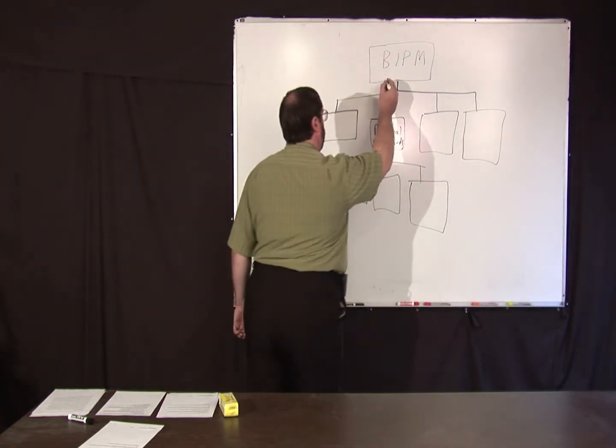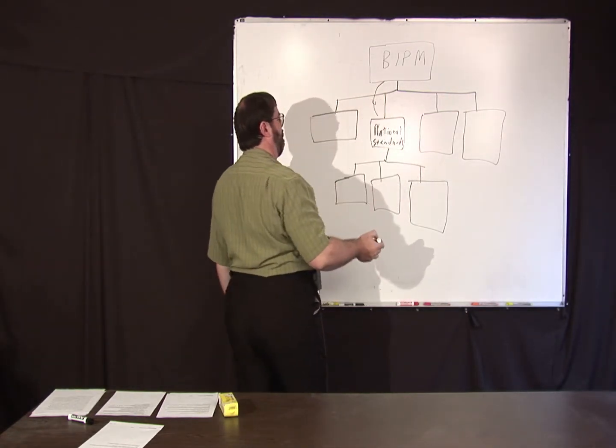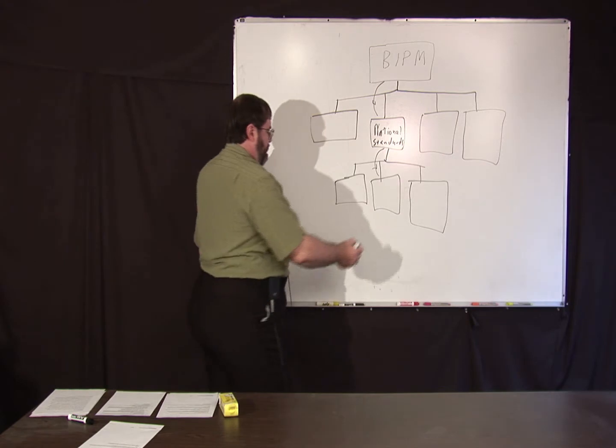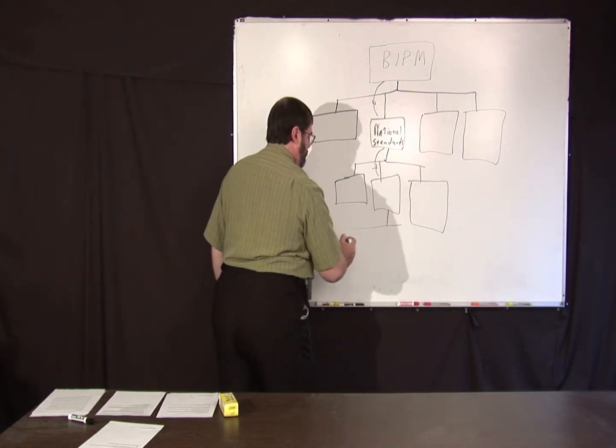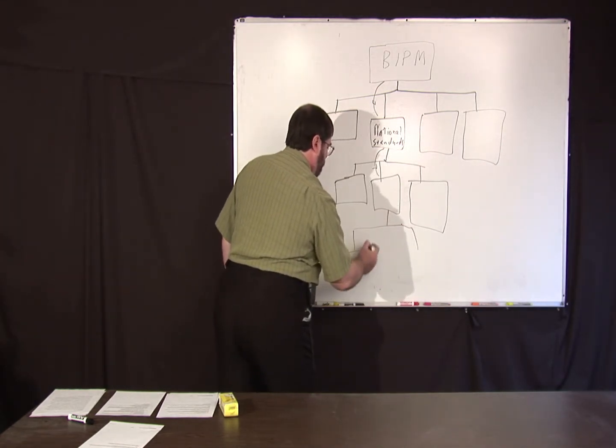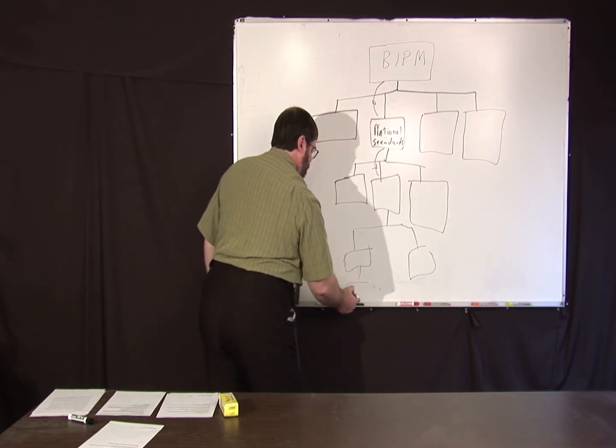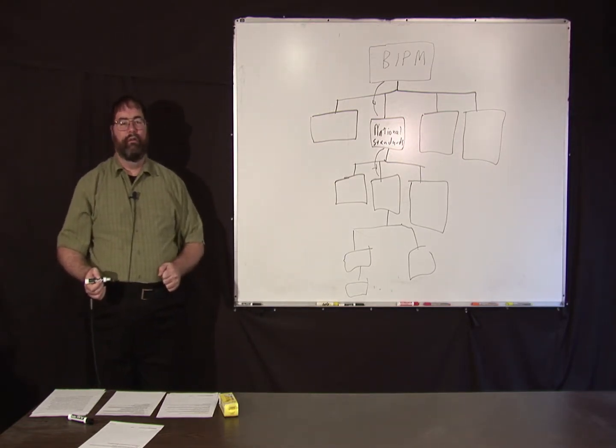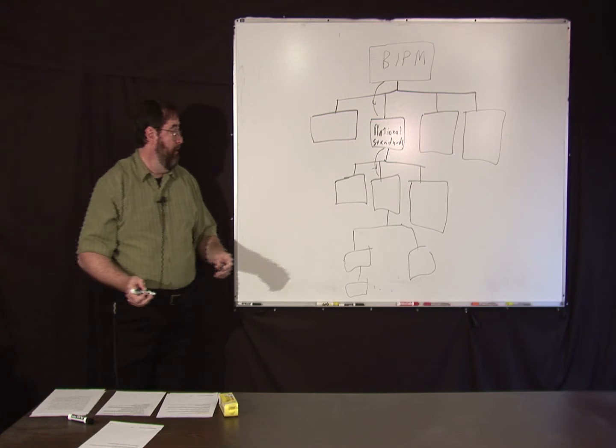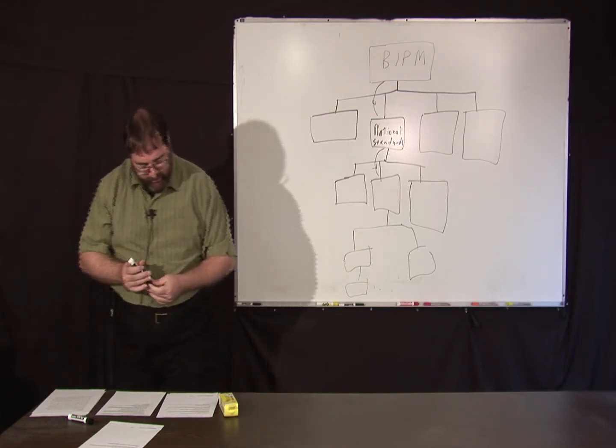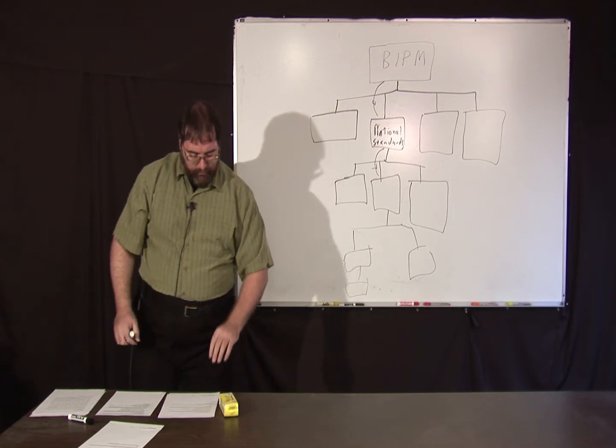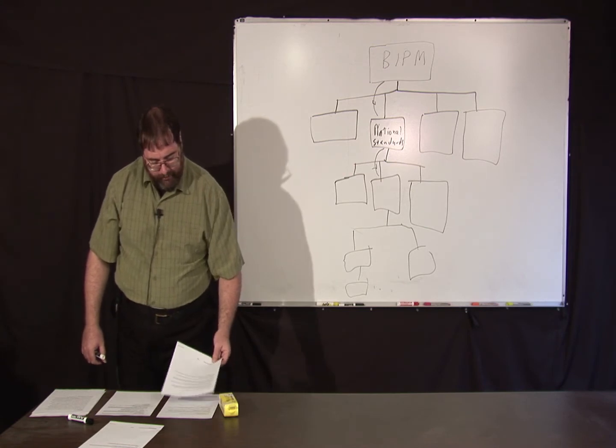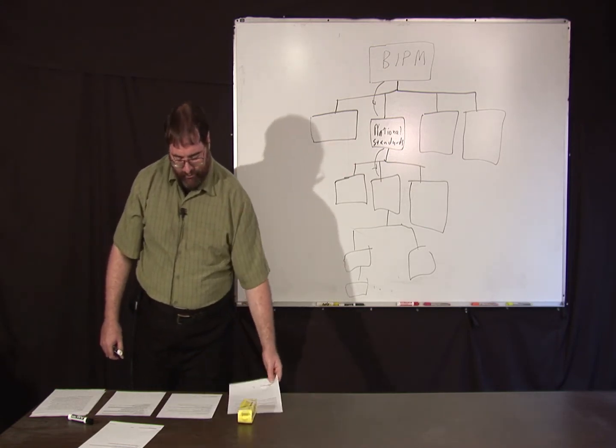And each step, there's going to be some uncertainty associated with this. Then, there might be secondary Cal labs or laboratories and so on. And the chain could be as long as need be. And that's pretty much how the idea of the, once you have national standards, you can have secondary standards and primary standards and reference standards and working standards, which we'll talk about in a minute.